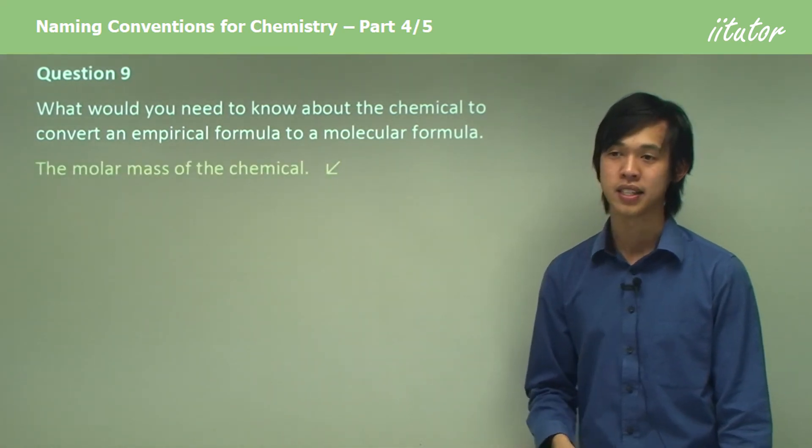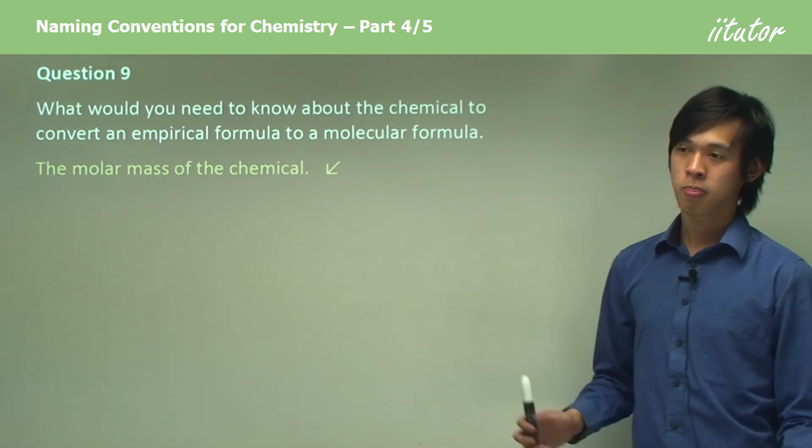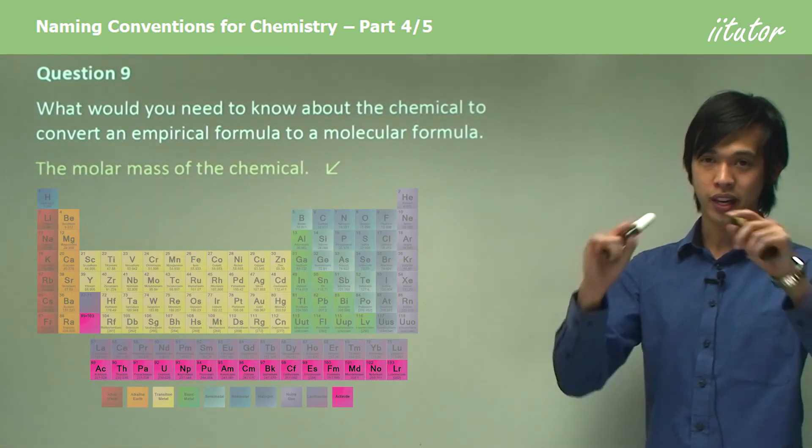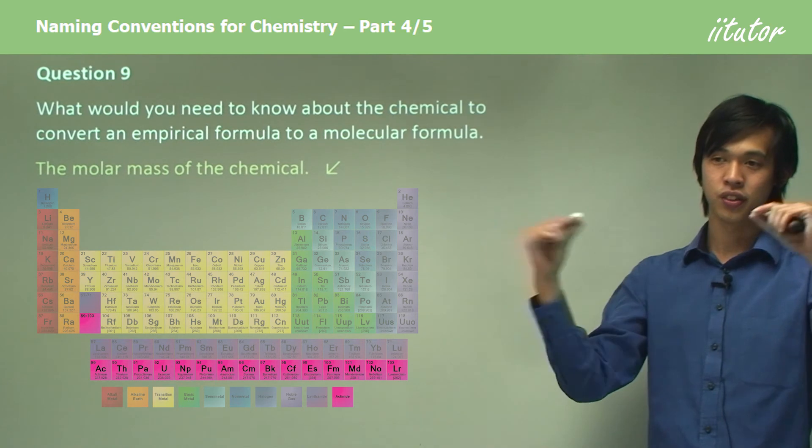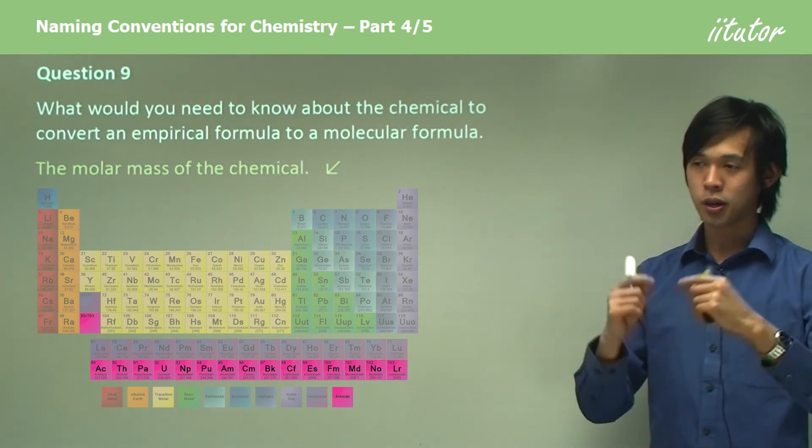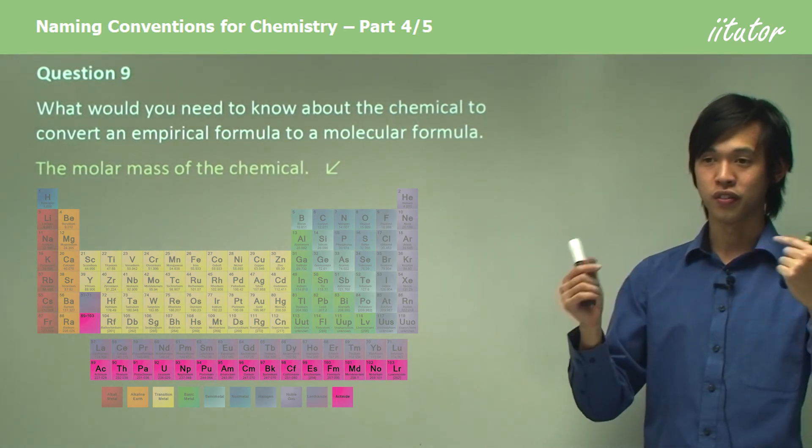And all you need to know is the molar mass. So you know on your periodic table, it has the molar masses of each of your elements. So the molar mass of the chemical is just the sum of all of its parts.